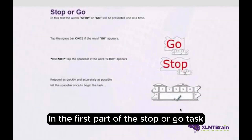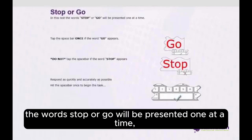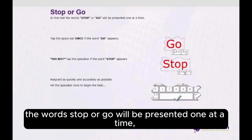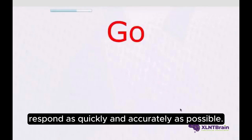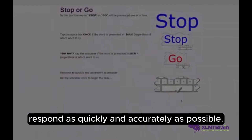In the first part of the Stop or Go task, the words Stop or Go will be presented one at a time. Tap the space bar once if the word Go appears. Do not tap the space bar if the word Stop appears. Respond as quickly and accurately as possible.